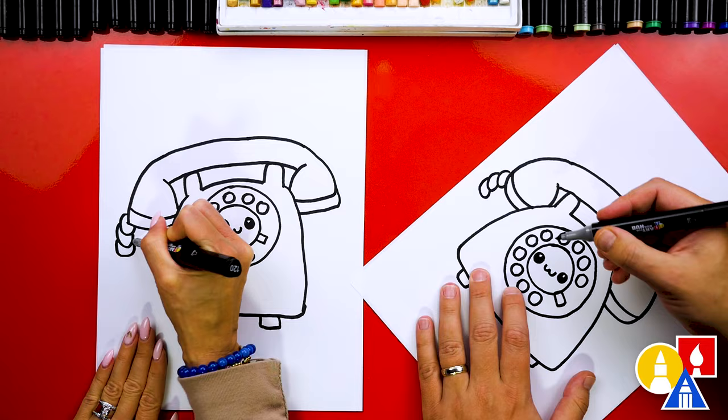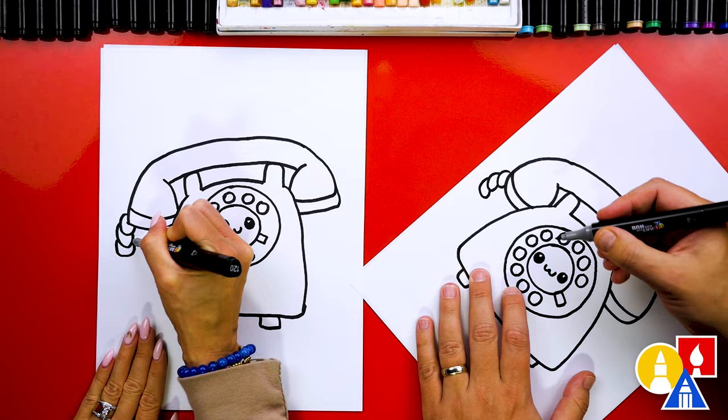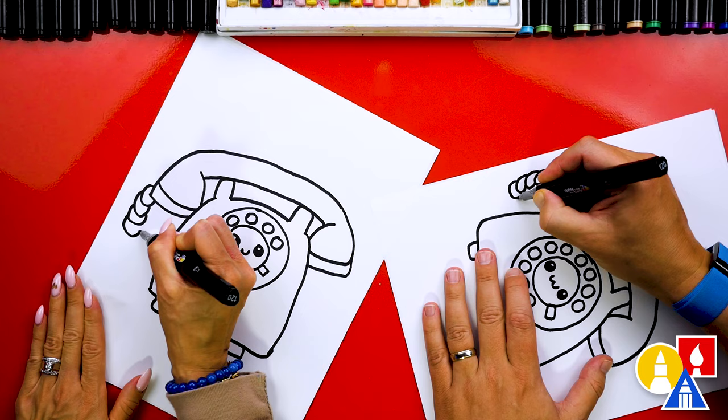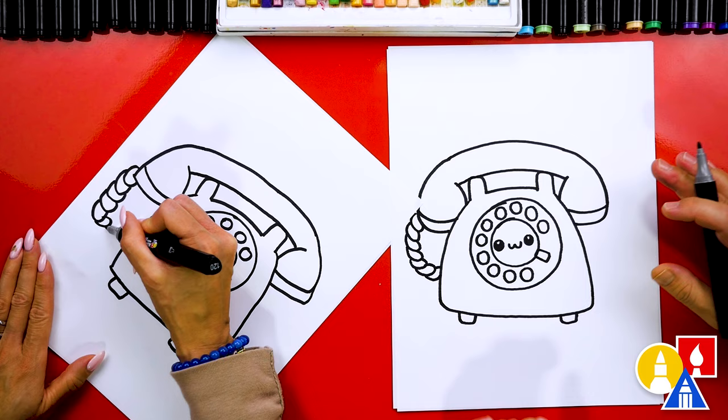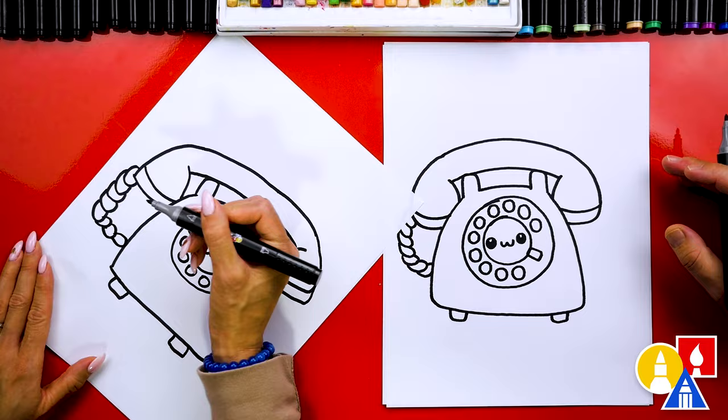And this part's a little tricky, but we'll try to match that same shape. And also, we're going to try to curve it. So you could also turn your paper if that helps. And we're going to try to connect it into the base. I'm going to keep turning my paper and connect it in. That's a short cord. They're usually really long. There you go. You're doing it. Yes, you did it.